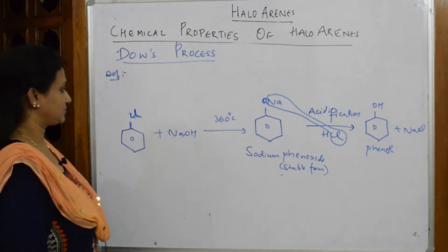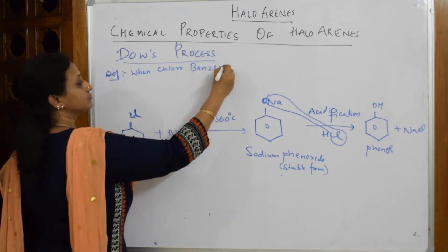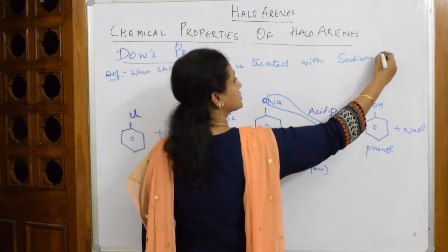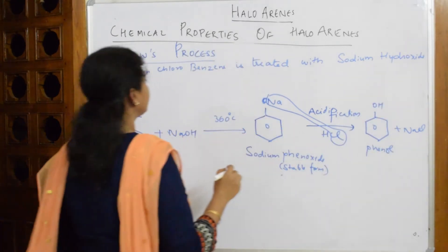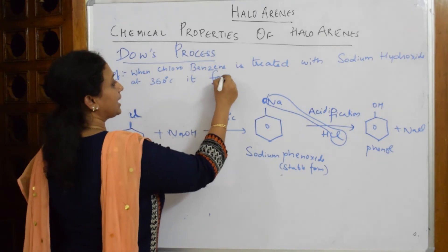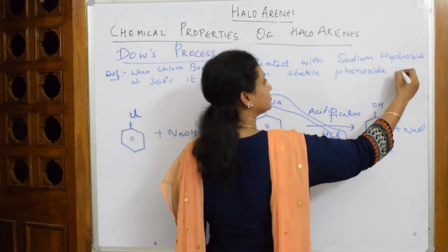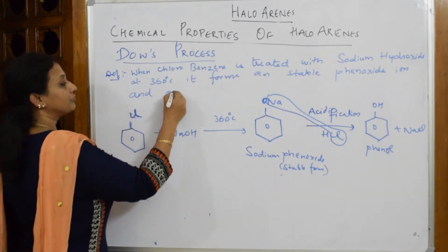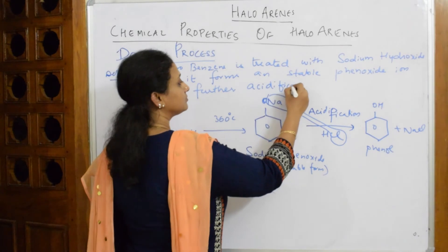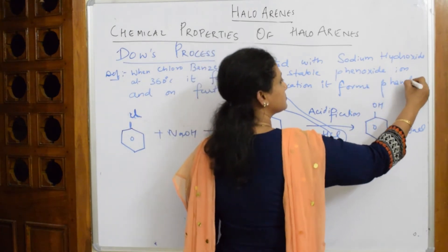This is your Dow process. The definition: when chlorobenzene is treated with sodium hydroxide at 360 degrees centigrade, it forms a stable phenoxide ion, and on further acidification — meaning in an acidic medium — it forms phenol. This is the Dow process.